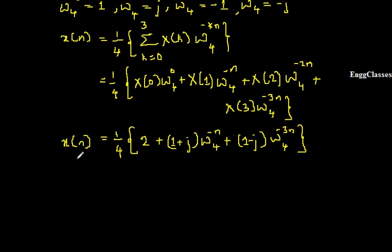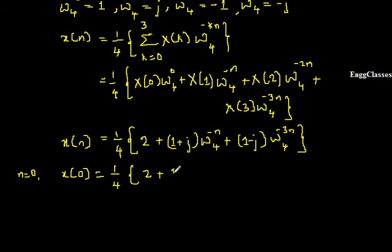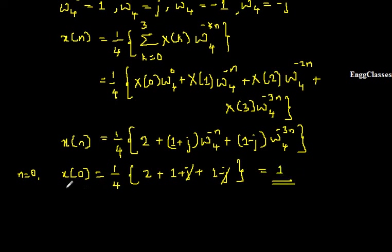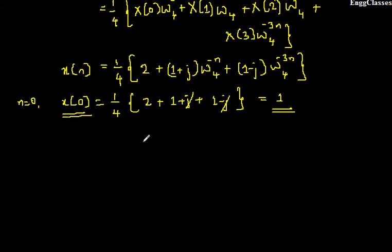To find the different samples, I put n equal to 0, 1, 2, 3. First, putting n equal to 0 to get X(0): 1/4 · [2 + (1+j)·W4^0 + (1-j)·W4^0] = 1/4 · [2 + (1+j)·1 + (1-j)·1]. The plus j and minus j cancel, giving 2+1+1 = 4, divided by 4 equals 1. So X(0) = 1.